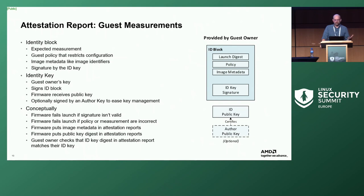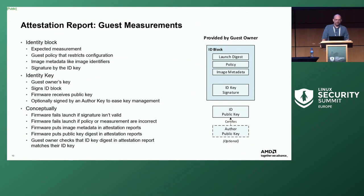When the launch finish command is executed, the firmware receives the signed ID block and the public key of the ID key pair. It first validates that this is the correct signature of the ID block, and if that passes, it enforces the small policy inside the ID block. We also optionally have an author key, which signs the ID key, to support a perhaps more flexible PKI around signing these blocks.